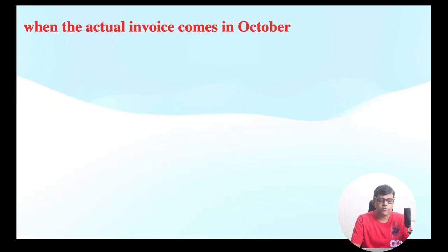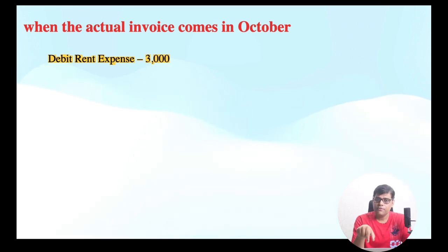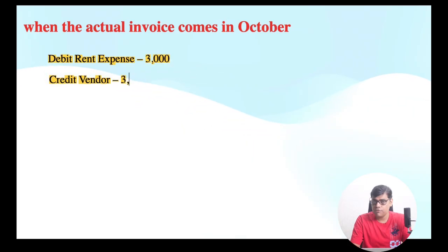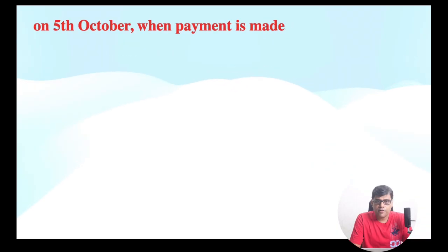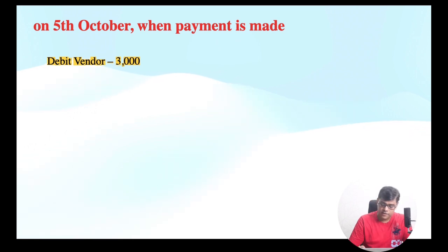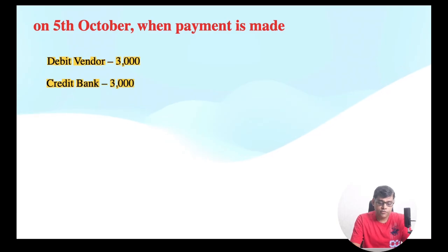Step 3: when we actually receive the invoice — let's say 2nd October — we post the transaction, say on 5th October. The entry date will be 5th October but we are going to post the transaction for the September period. Debit will be rent expense 3,000 for September period and credit the vendor 3,000 — this time we credit the vendor because we have actually received the invoice. Step 4: on 5th October, as per the contract, we pay the vendor. The vendor account is debited 3,000 and credit will be your bank account. In this way we justify both our accounting as well as costing requirements.